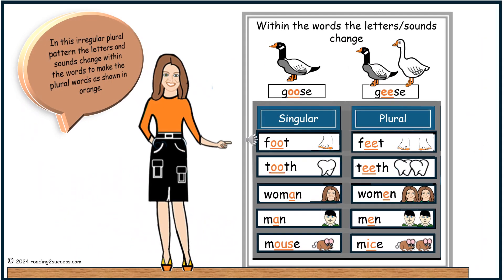In this irregular plural pattern, the letters and sounds change within the words to make the plural words, as shown in orange. They are: goose/geese, foot/feet, tooth/teeth, woman/women, man/men, and mouse/mice.